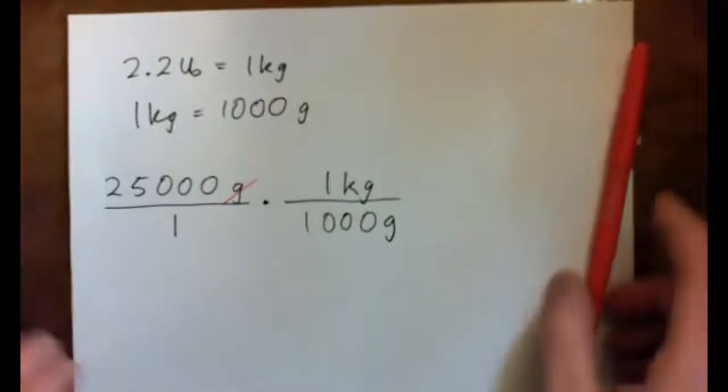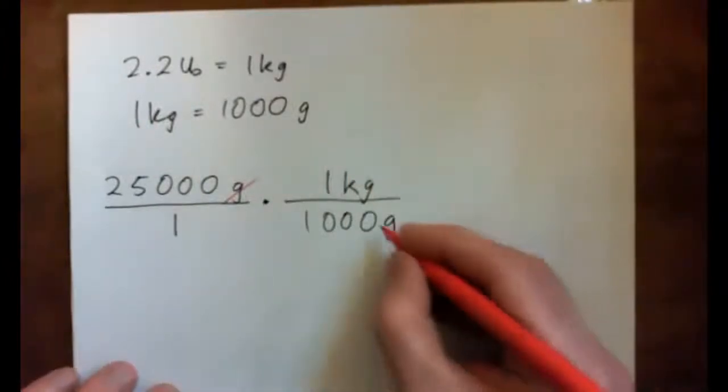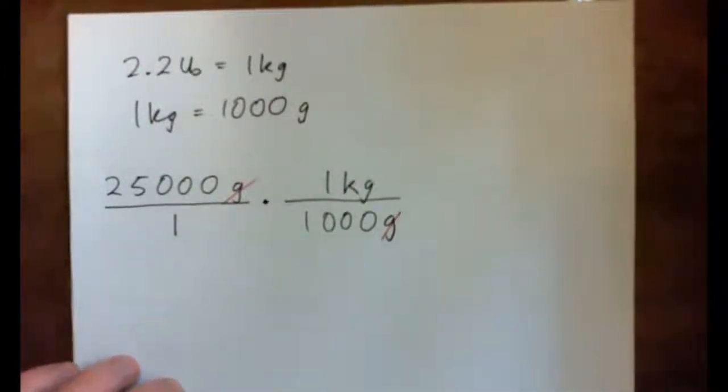So I multiply it by 1 kilogram over 1,000 grams, and these grams cross-cancel. And now my units will be in kilograms. Now that's the first step. Does that make sense? Okay, yeah.